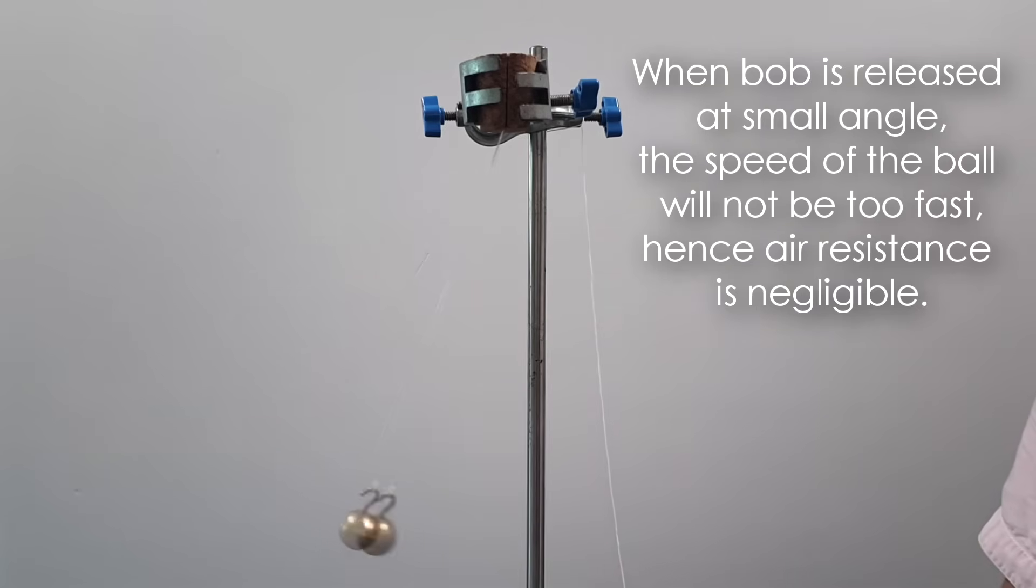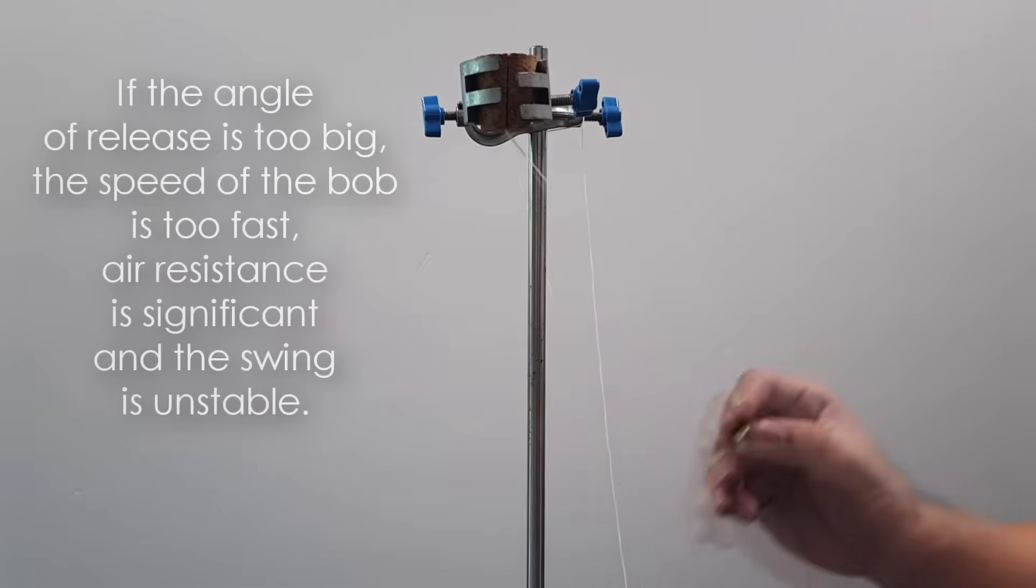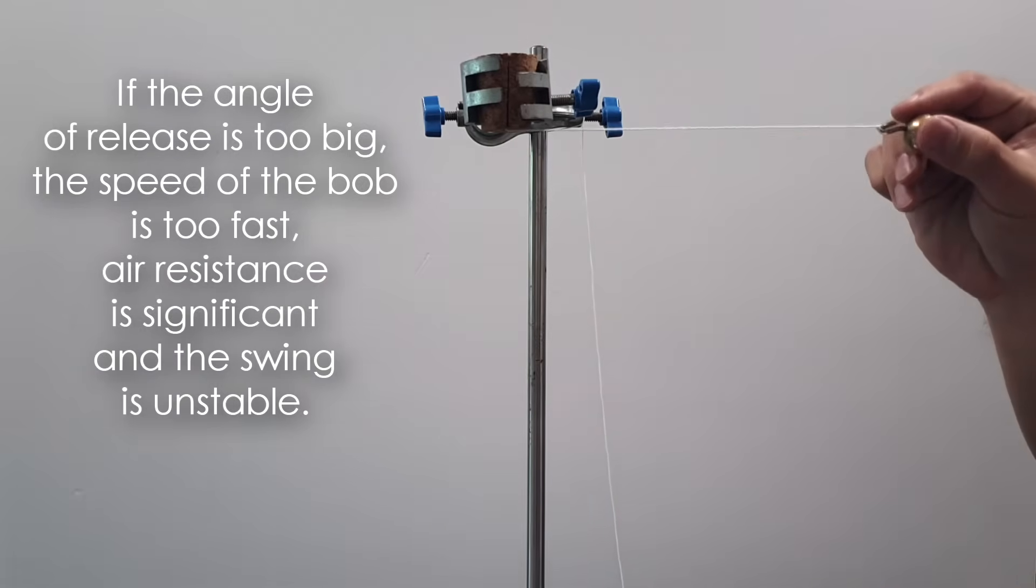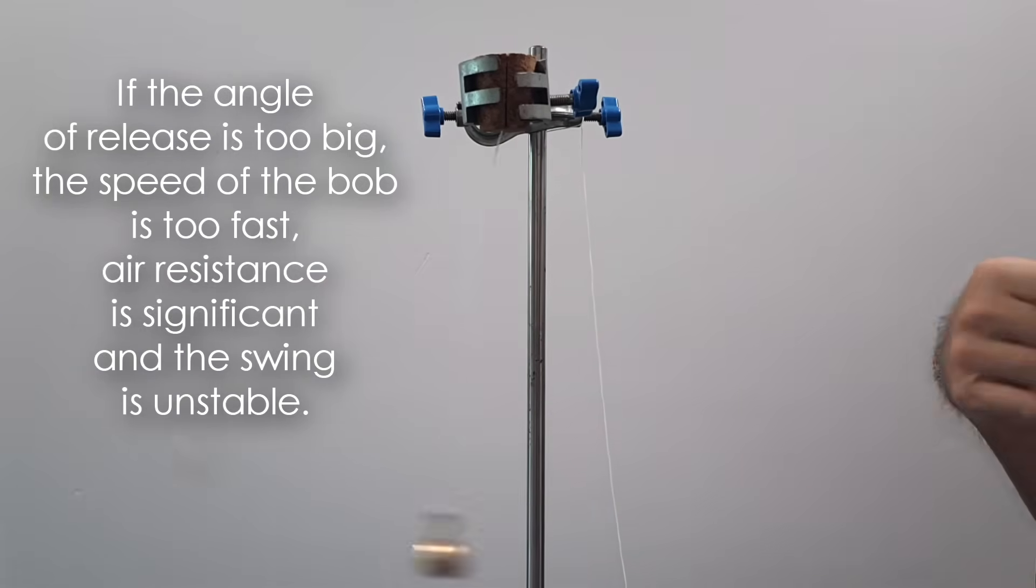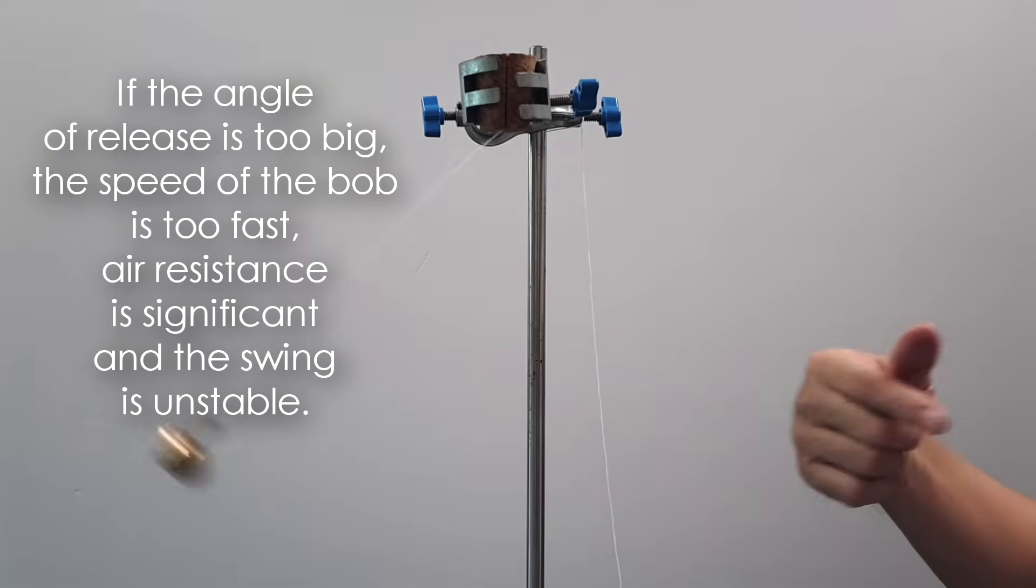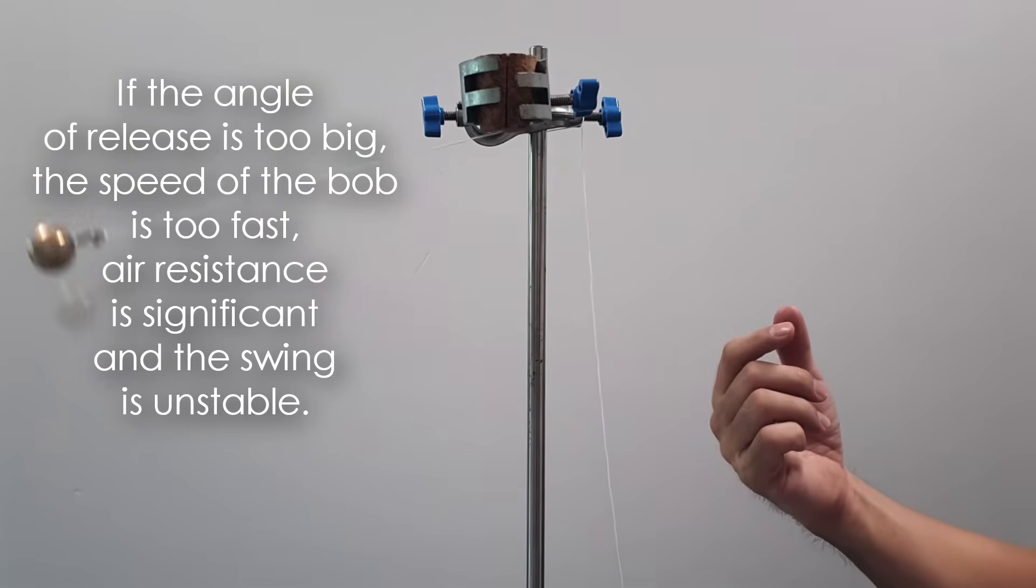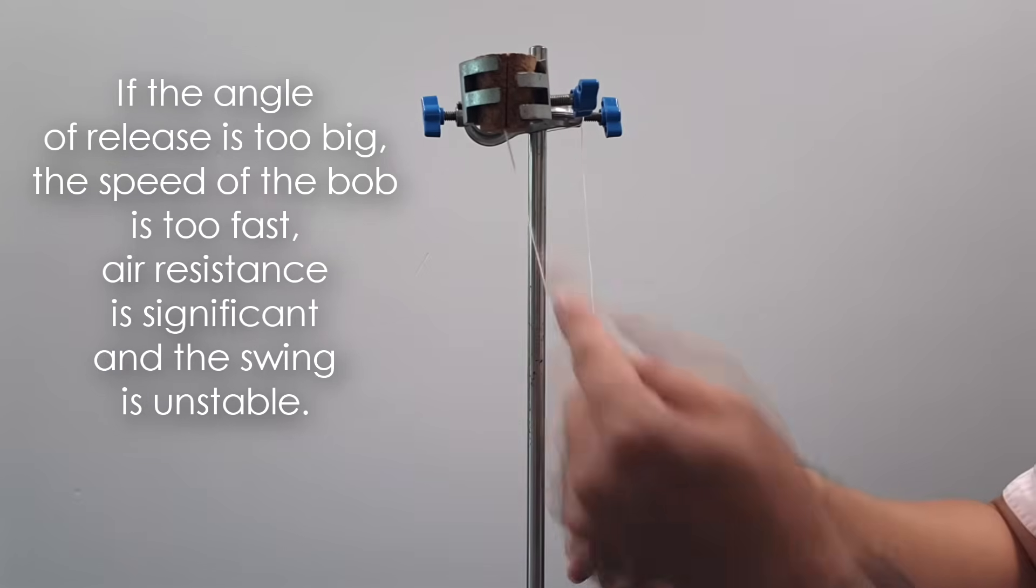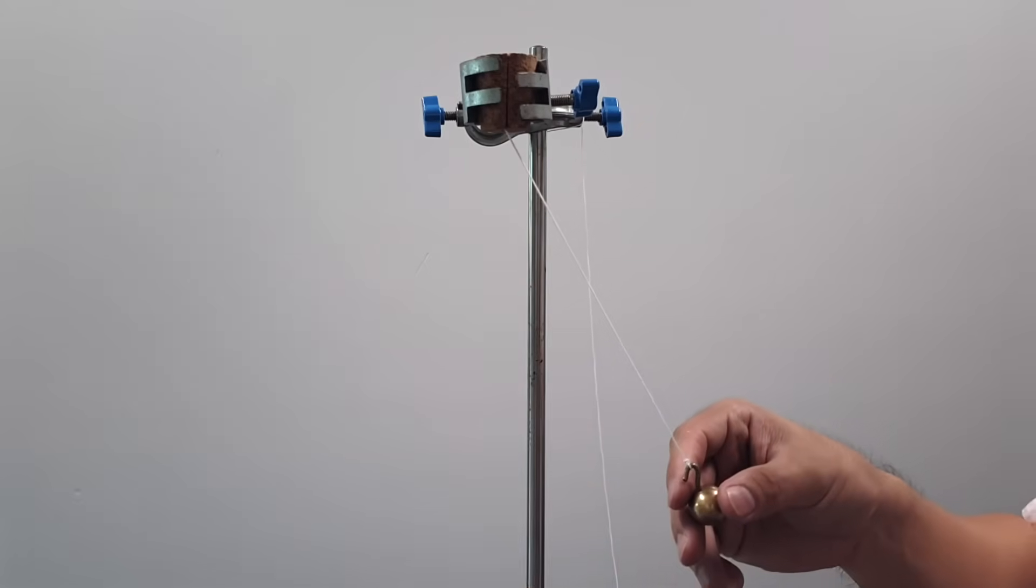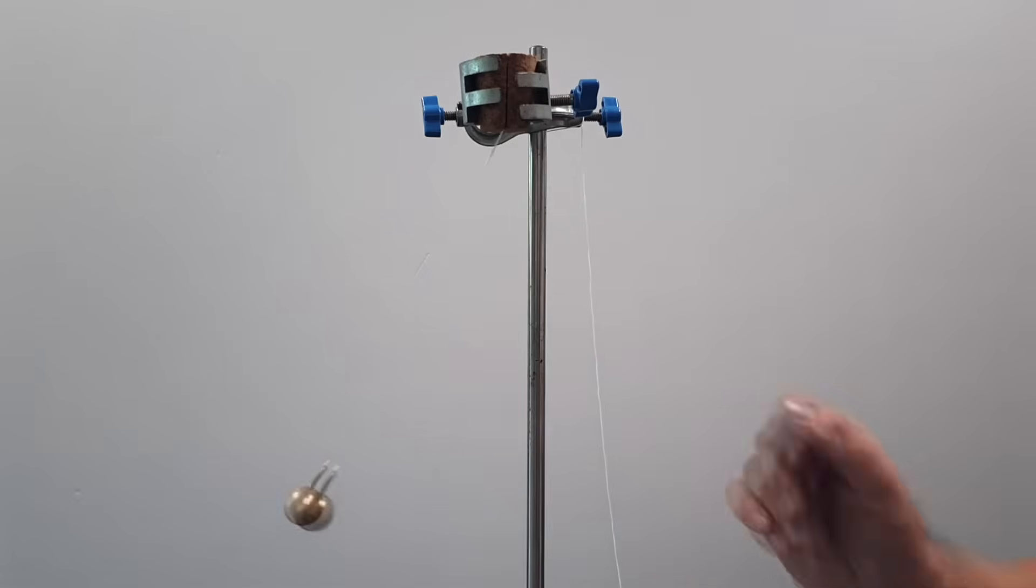Therefore air resistance is considered negligible. If the angle is very big, as you can see here, the speed of the pendulum is actually quite fast, so air resistance is significant and the swing will become unstable after a while. So just take note: just a small angle will do.